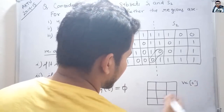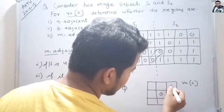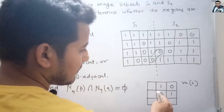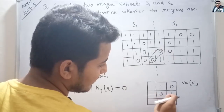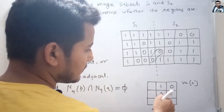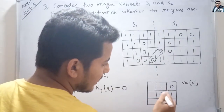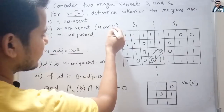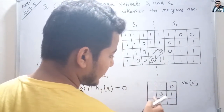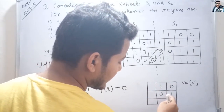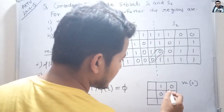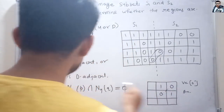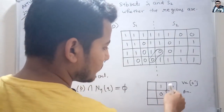Suppose V equals 0 and we have two pixels: 0 and 0 here, and 1 and 1 here. These two 0-pixels are not 4-adjacent because the 4-adjacent pixels of one are in the four orthogonal directions, and the other pixel is not in those positions. However, these two pixels are 8-adjacent because 8-adjacency includes both 4-adjacent and diagonal positions.